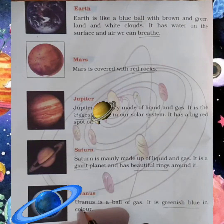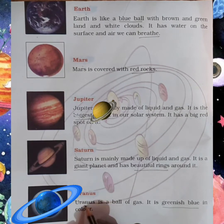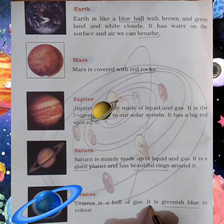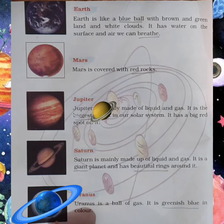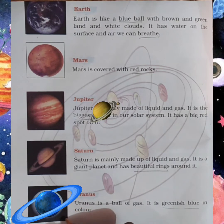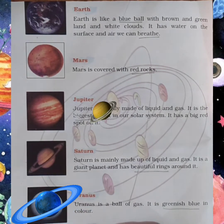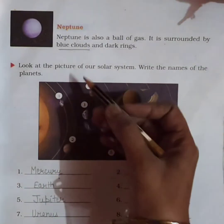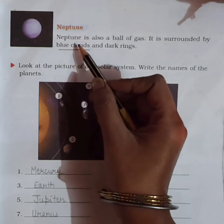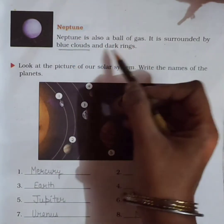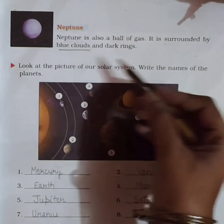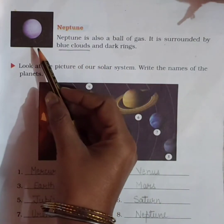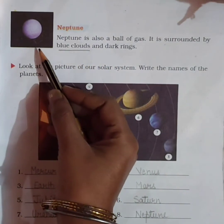The seventh planet is Uranus. Uranus is a ball of gas; it is greenish blue in color. Open page number 99. The eighth and last planet is Neptune. Neptune is also a ball of gas, surrounded by blue clouds and dark rings.